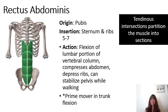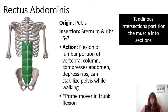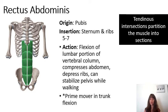Rectus abdominis is a muscle that goes straight down the abdomen. It originates on the pubic tubercles of the pubic portion of the coccygeal bones and inserts on the sternum and the cartilage of ribs five through seven. The action of this muscle is flexion of the lumbar portion of the vertebral column. It can also compress the abdomen, depress the ribs, and stabilize the pelvis during walking.